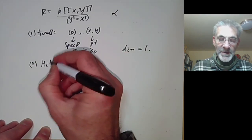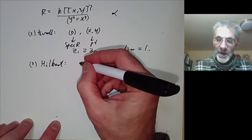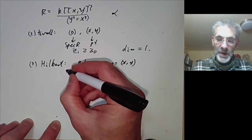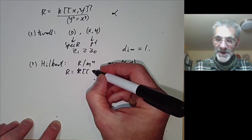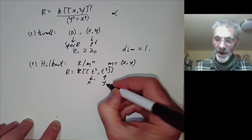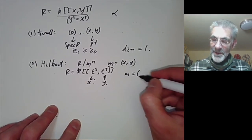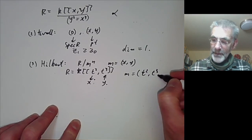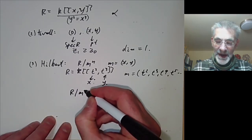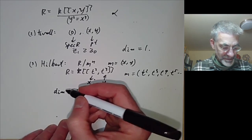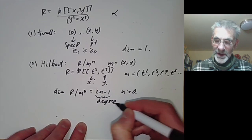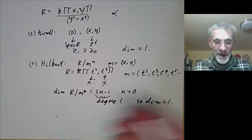For the Hilbert polynomial definition, we look at the dimension of R/M^n where M is the maximal ideal (x, y). We can write R as formal power series in t² and t³, where t² = x and t³ = y. The maximal ideal M consists essentially of all nonzero powers of t. One can see that R/M^n has dimension 2n − 1 for n > 0, a polynomial of degree 1, so the dimension is 1.